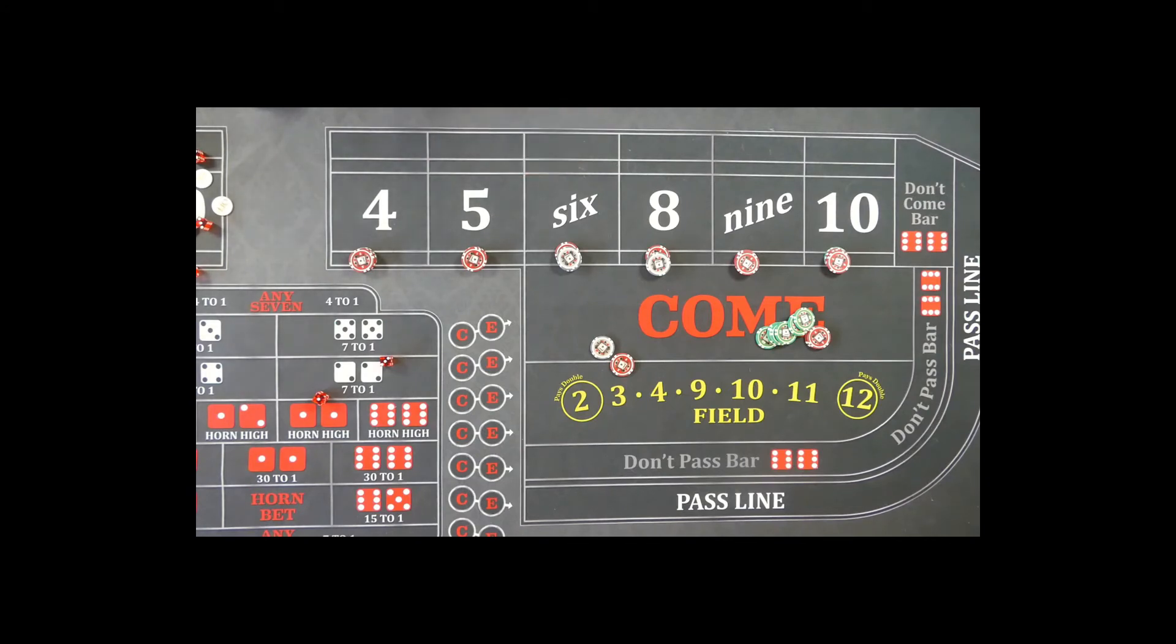I actually know a couple people that will do something like a 74 across including the point, where they'll do the two units across but then they'll do three units on the four and ten. Of course, they have to explain that the first couple of times they play it, but then after that, as long as they're consistent with it, the dealers have it. So again, just some variations on what can be played. I hope you guys find this interesting, illuminating, enlightening, or at least just plain fun. Thank you everybody for watching, and we will catch you next time. Bye now.